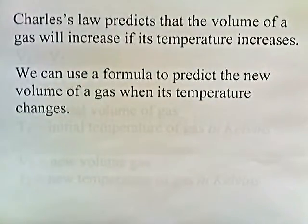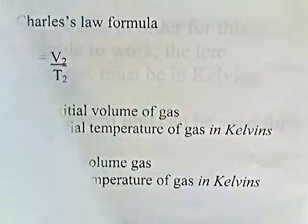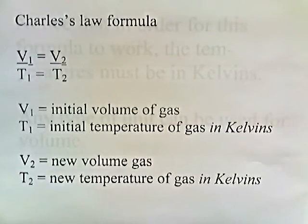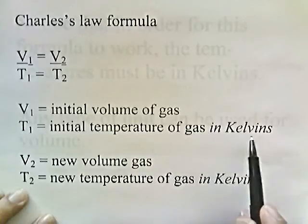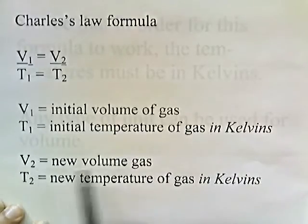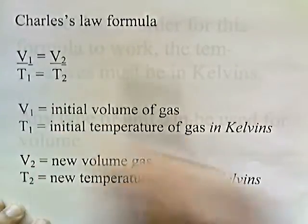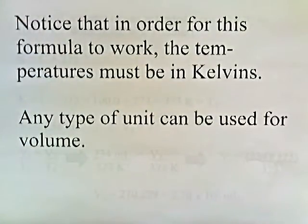Charles' Law predicts that the volume of a gas will increase if its temperature increases. We can use a formula to predict the new volume of a gas when its temperature changes. The Charles' Law formula is V1 over T1 equals V2 over T2. V1 is the initial volume of the gas. T1 is the initial temperature of the gas in kelvins. V2 is the new volume and T2 is the new temperature in kelvins. For Charles' Law, the temperature must be in kelvins, though any unit can be used for volume.